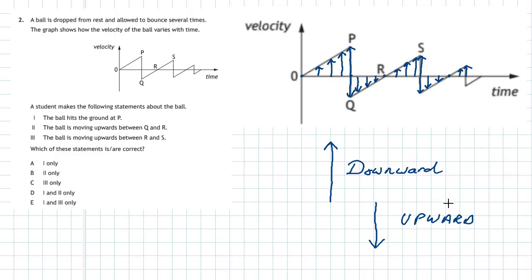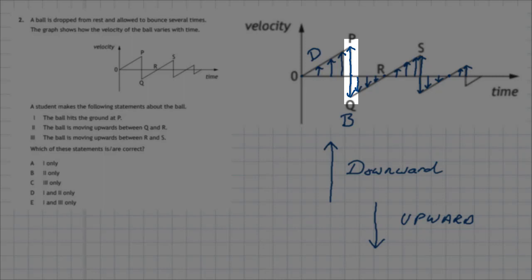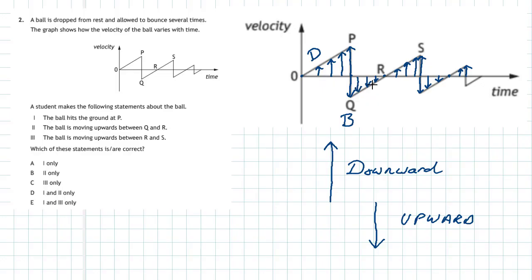Between O and P all the arrows point upward, so the ball is moving downwards — accelerating downward with increasing velocity. At point P, the velocity vector is still going downward and then suddenly switches to the opposite direction, meaning upward. This sudden change in direction of the velocity vector is what we mean by a bounce in physics. After the bounce, the vectors point downward on the graph, which means the ball is actually moving upward between Q and R.